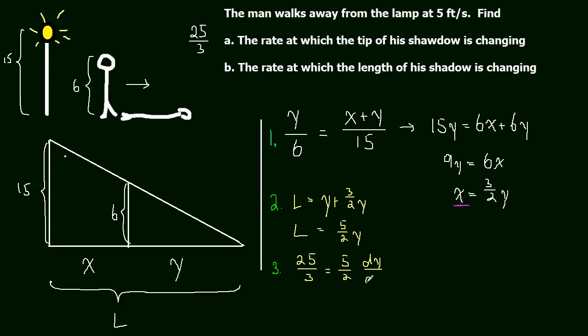So we can just do this division, just divide by five-halves, which is the same as multiplying by two-fifths. And this will come out to be equal to ten-thirds. Ten-thirds feet per second.